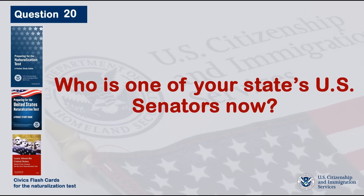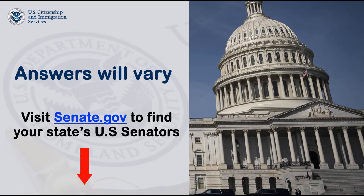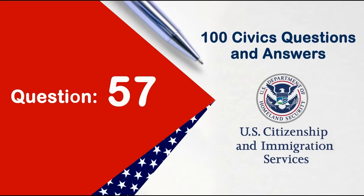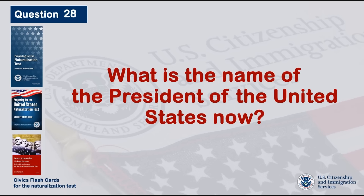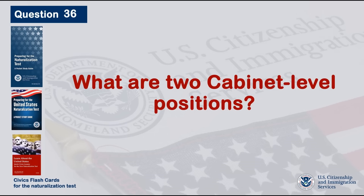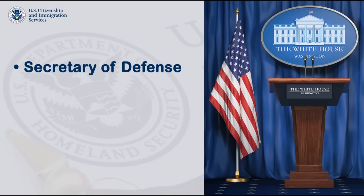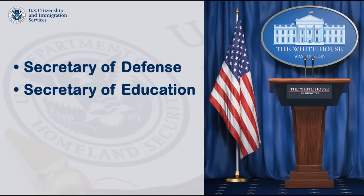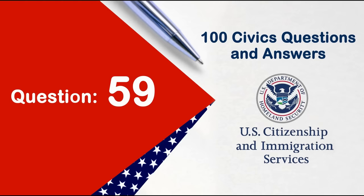Who is one of your state's U.S. senators now? Answers will vary — please check the link in the description. What is the name of the president of the United States now? Joe Biden. What are two cabinet-level positions? Secretary of Defense. Secretary of Education.